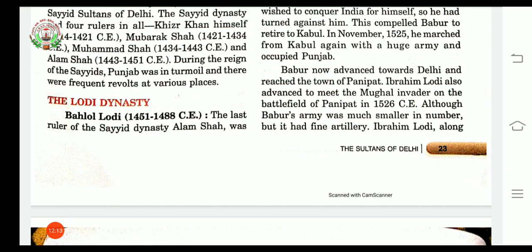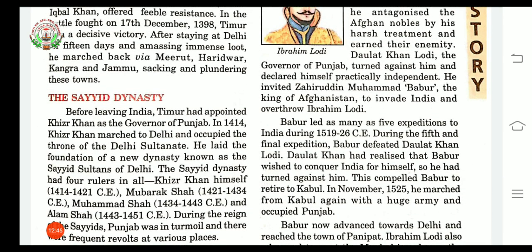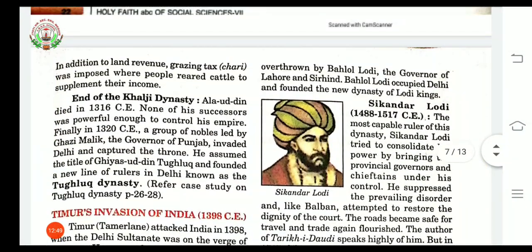After the Sayyids, a new dynasty was introduced — the Lodhi dynasty. Alam Shah, the last ruler of the Sayyid dynasty, was overthrown by the first ruler of the Lodhi dynasty, Behlal Lodhi. Behlal Lodhi ruled from 1451 to 1488 CE. He was the governor of Lahore and also of Sirhind. After overthrowing Alam Shah, Behlal Lodhi occupied Delhi and laid the foundation of the new dynasty of Lodhi kings.